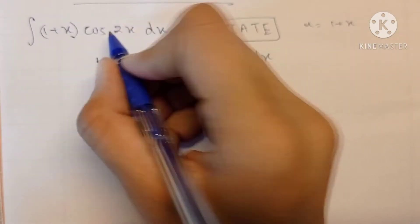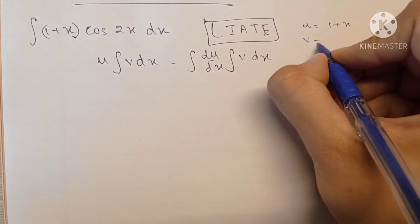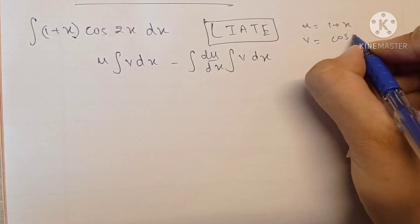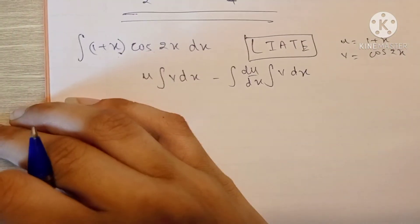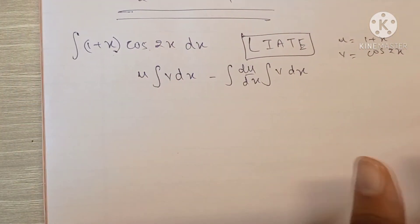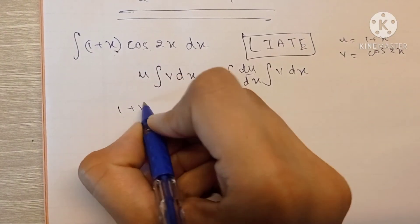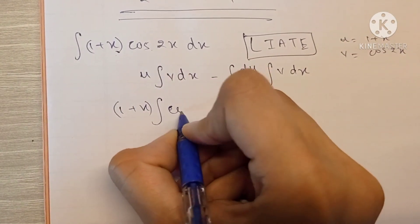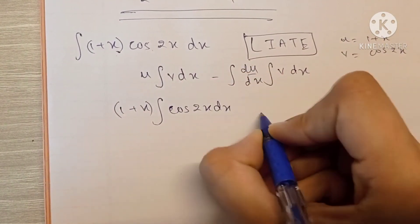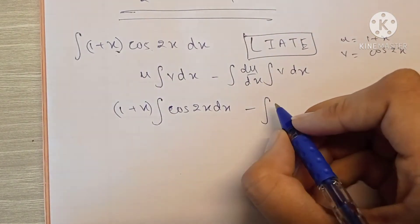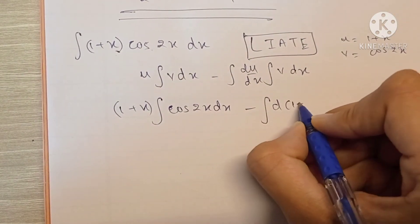So let's use the rule now. We have (1+x) into the integration of cos(2x)dx minus integration of differentiation of (1+x) times integration of cos(2x)dx.